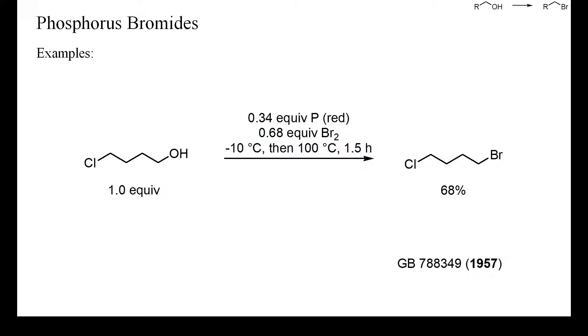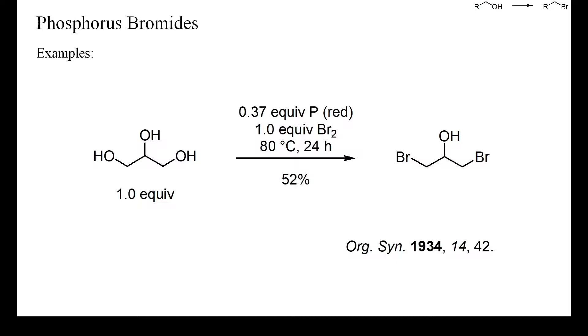Also in this example, the phosphorus bromides were generated in the reaction mixture from phosphorus and bromine. The starting alcohol was glycerol and only the two primary hydroxyl groups were displaced.